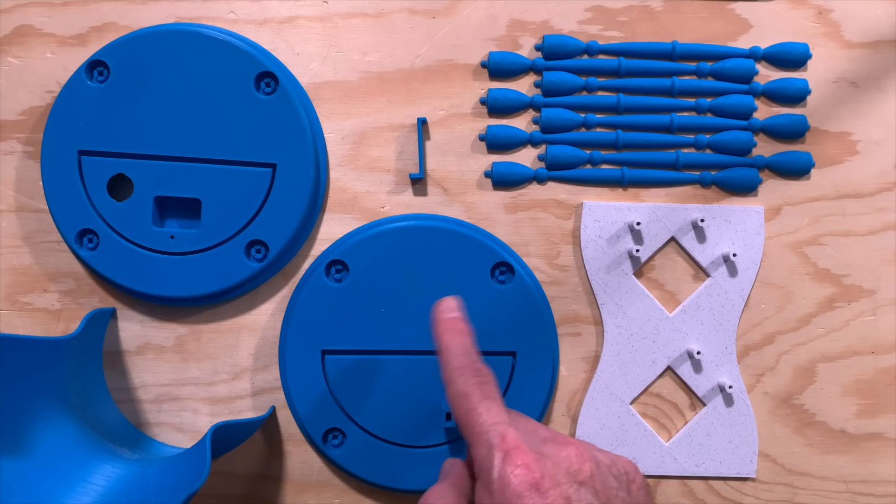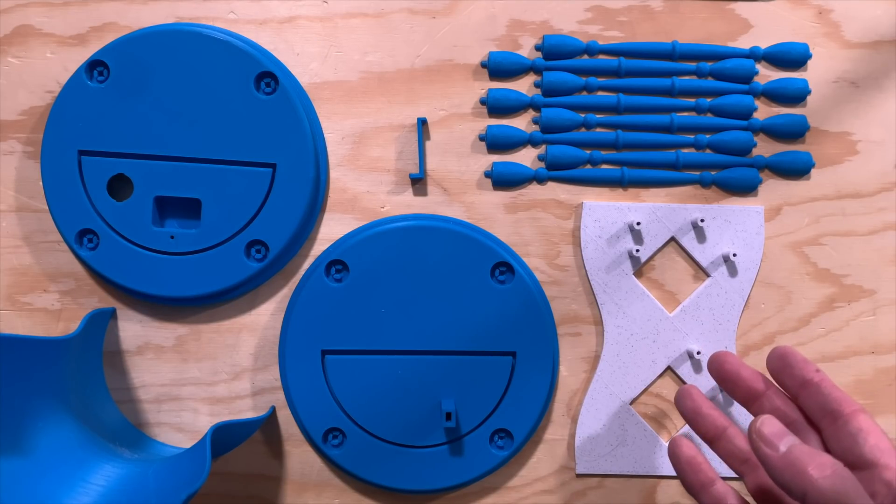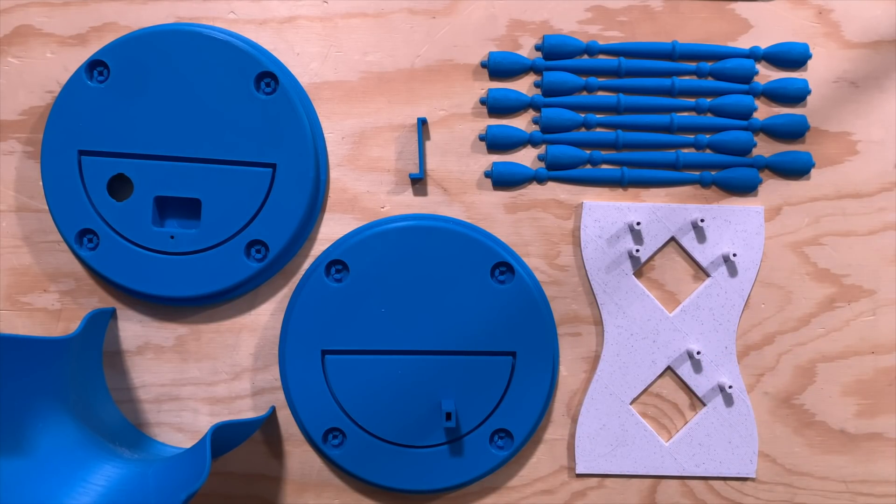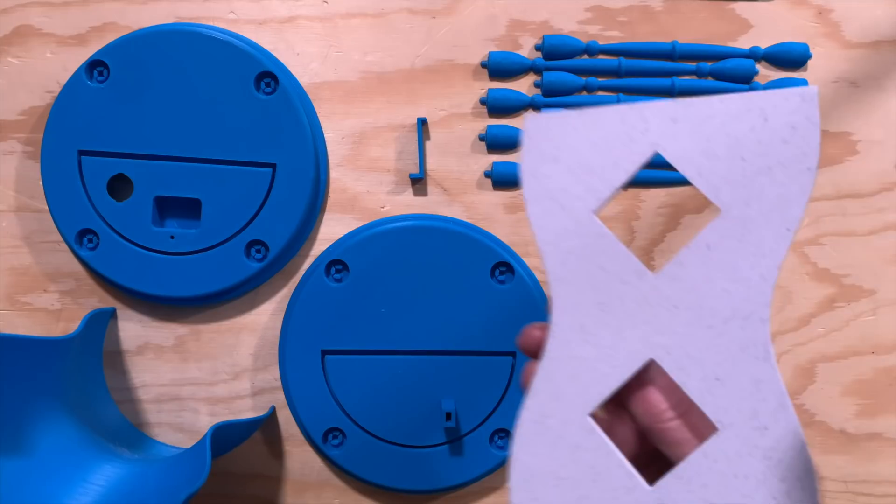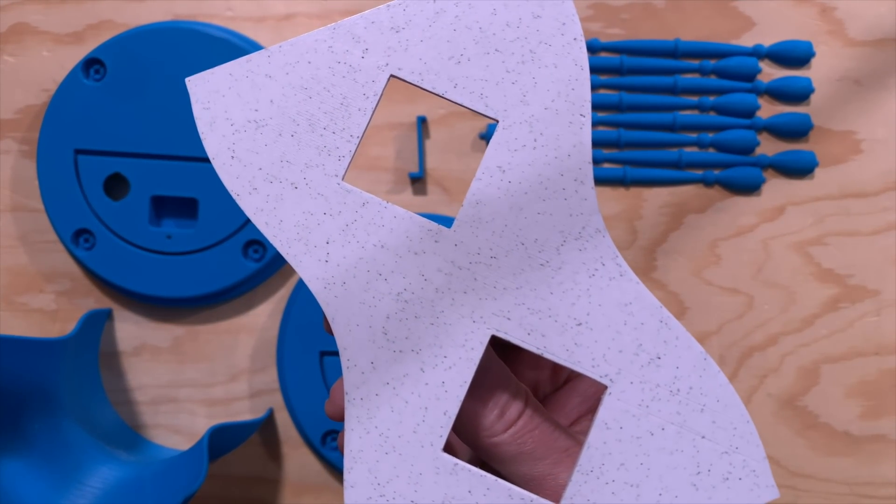I printed all of these on the FL Sun Super Racer 3D printer. The blue filament is Printed Solid's Jesse PLA in the pure cyan color. The white filament is Polymaker's Polytera PLA in the marble white color. It has little dark flecks in it to kind of give it a stone-like appearance, and I thought it would look like the sand you normally see in an hourglass.